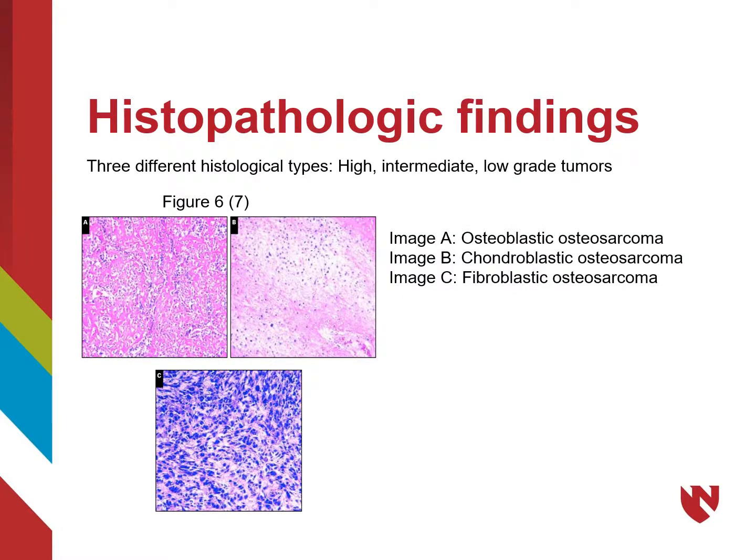Osteosarcoma can be split into three different grades, including low-grade tumors, intermediate-grade tumors, and high-grade tumors. Histologically, there is osteoblastic osteosarcoma, chondroblastic osteosarcoma, and fibroblastic osteosarcoma. Respectively, these can be seen as A, B, and C via hematoxylin and eosin staining.